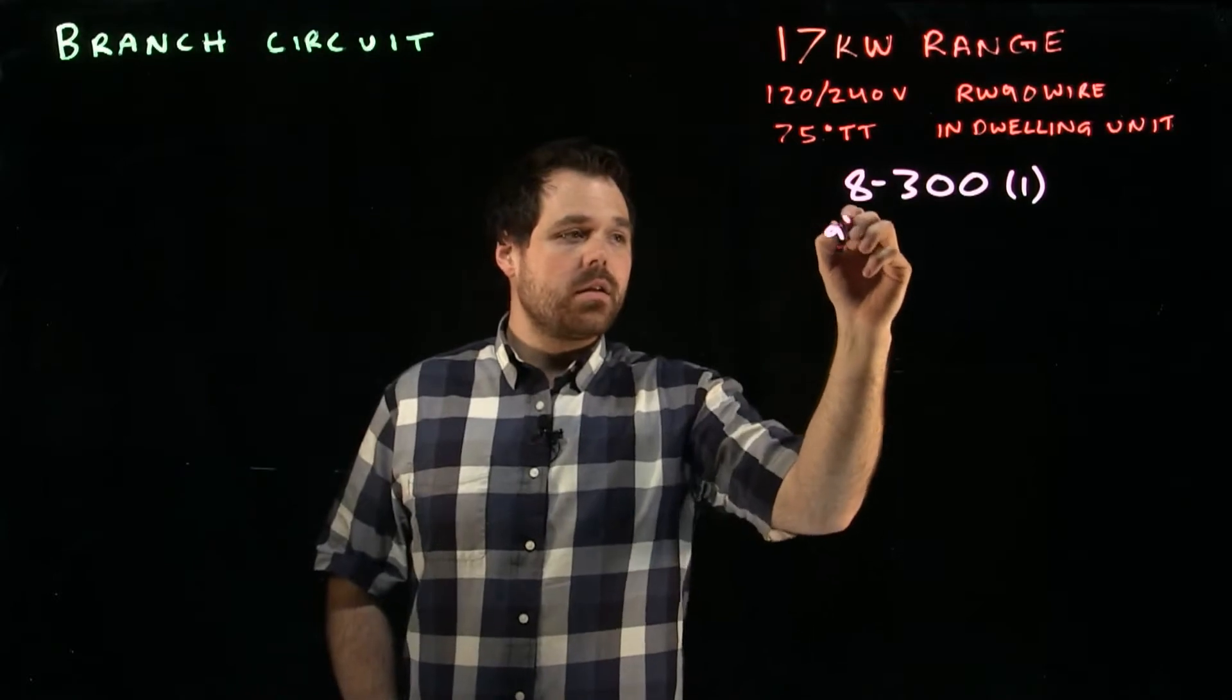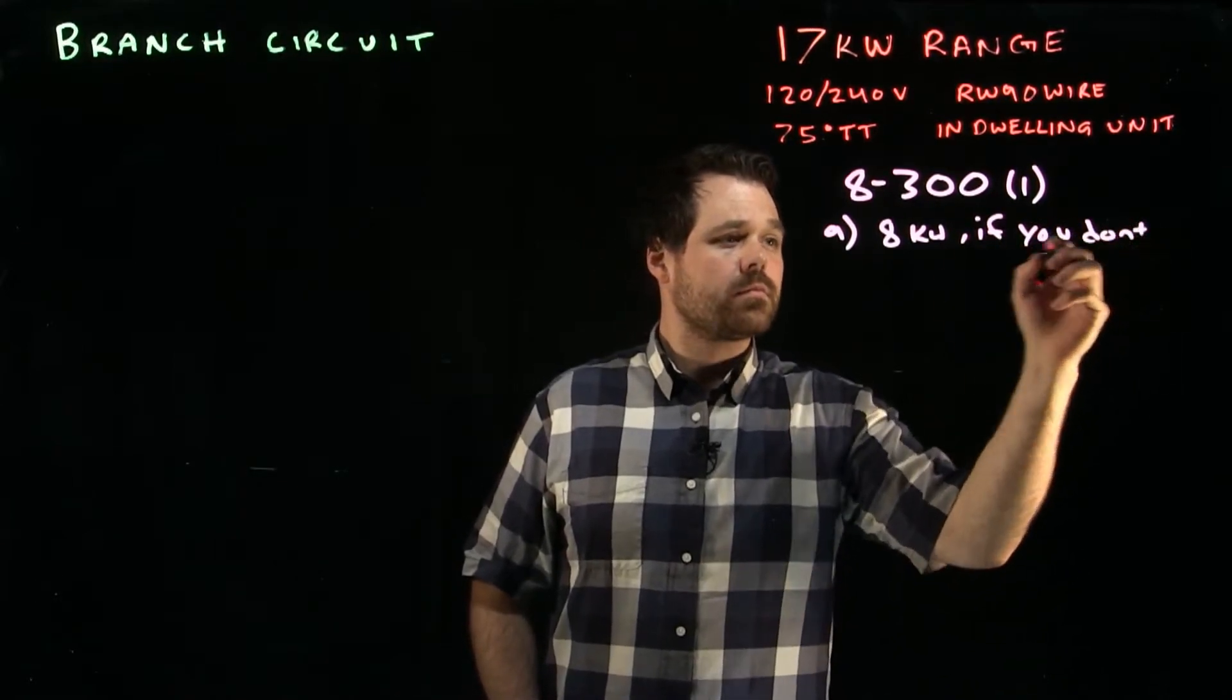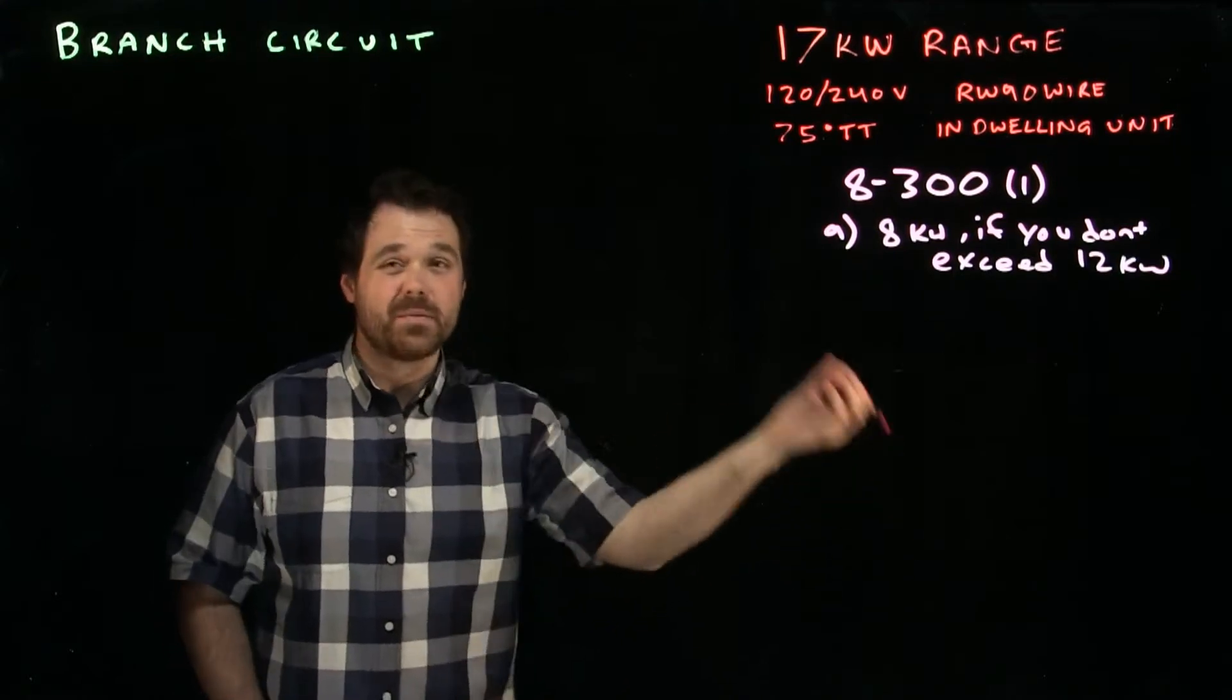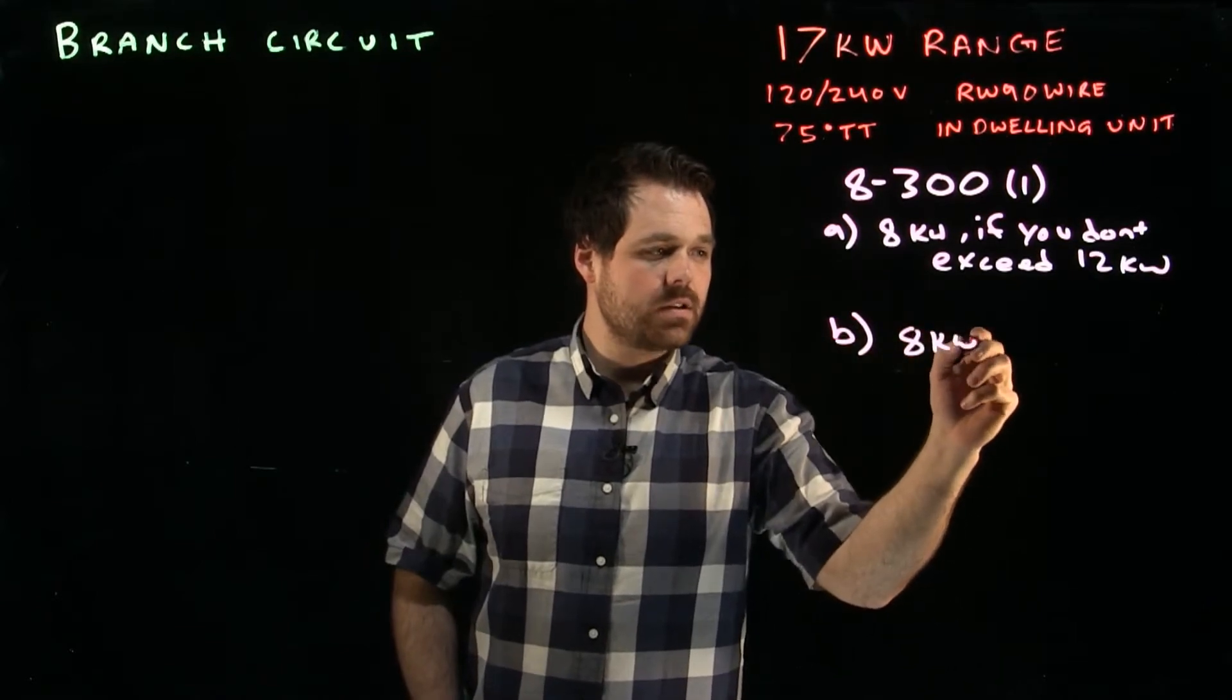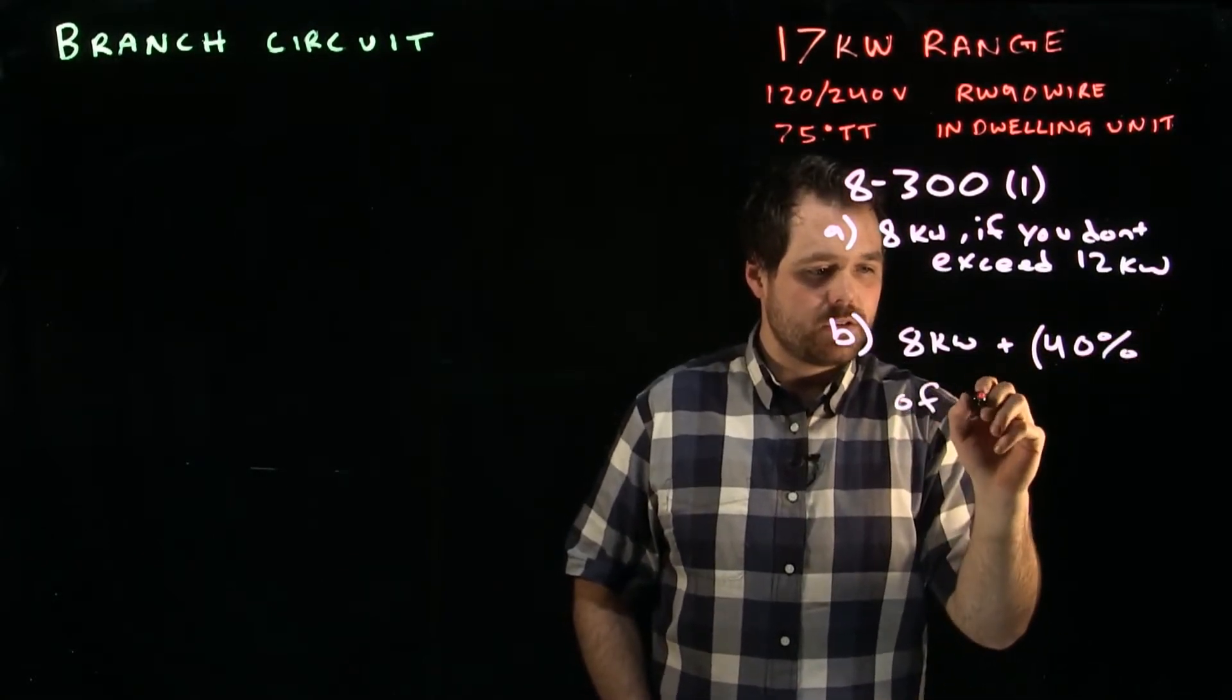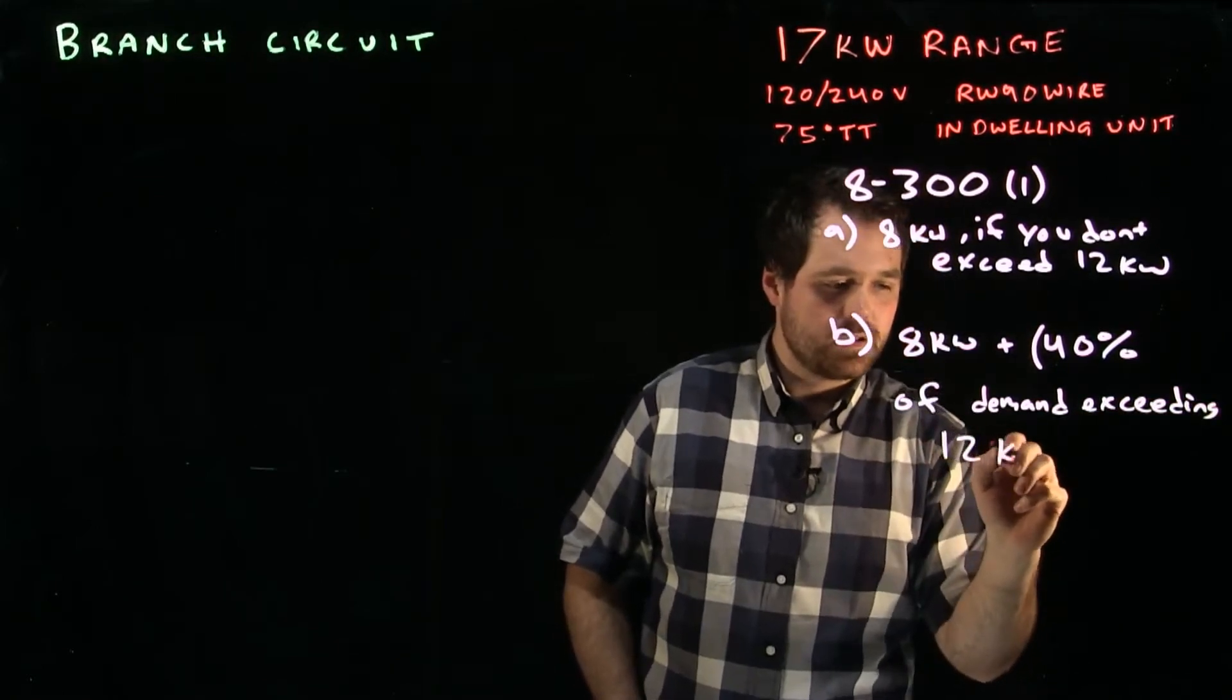It says 8 kilowatts if you don't exceed 12. So if I have a range and it doesn't exceed 8 or 12 kilowatts, then I would count it as 8 kilowatts. And B says 8 kilowatts plus 40% of demand exceeding 12 kilowatts.